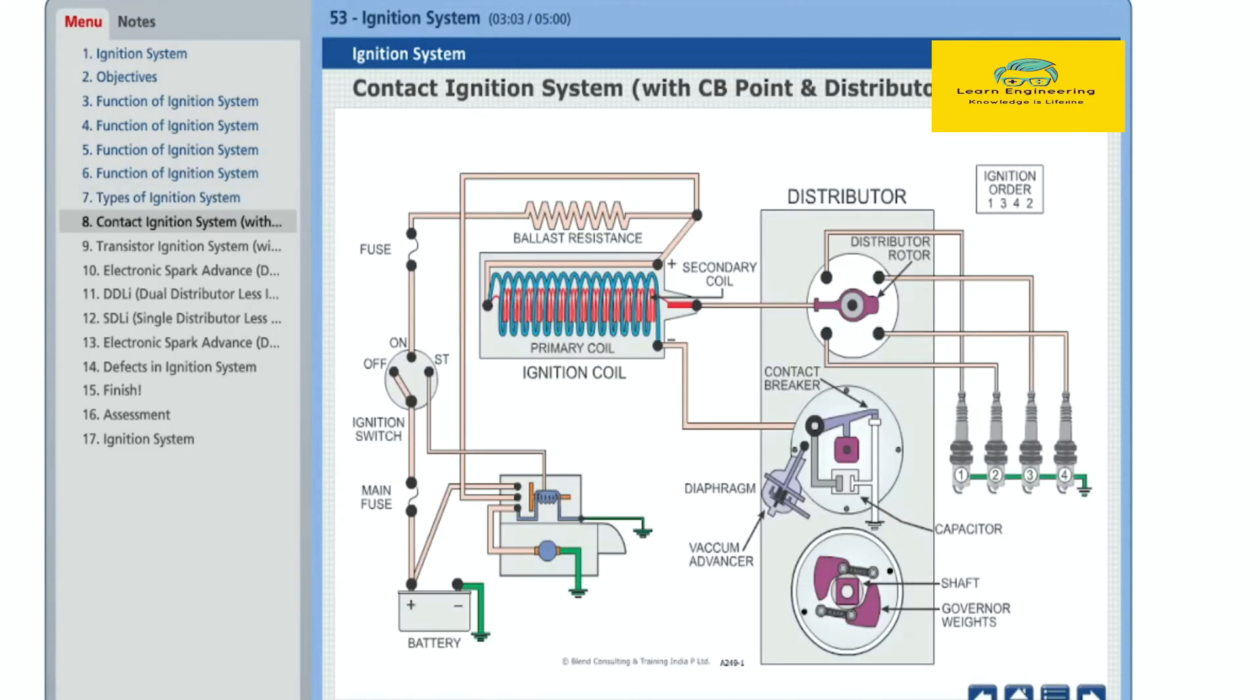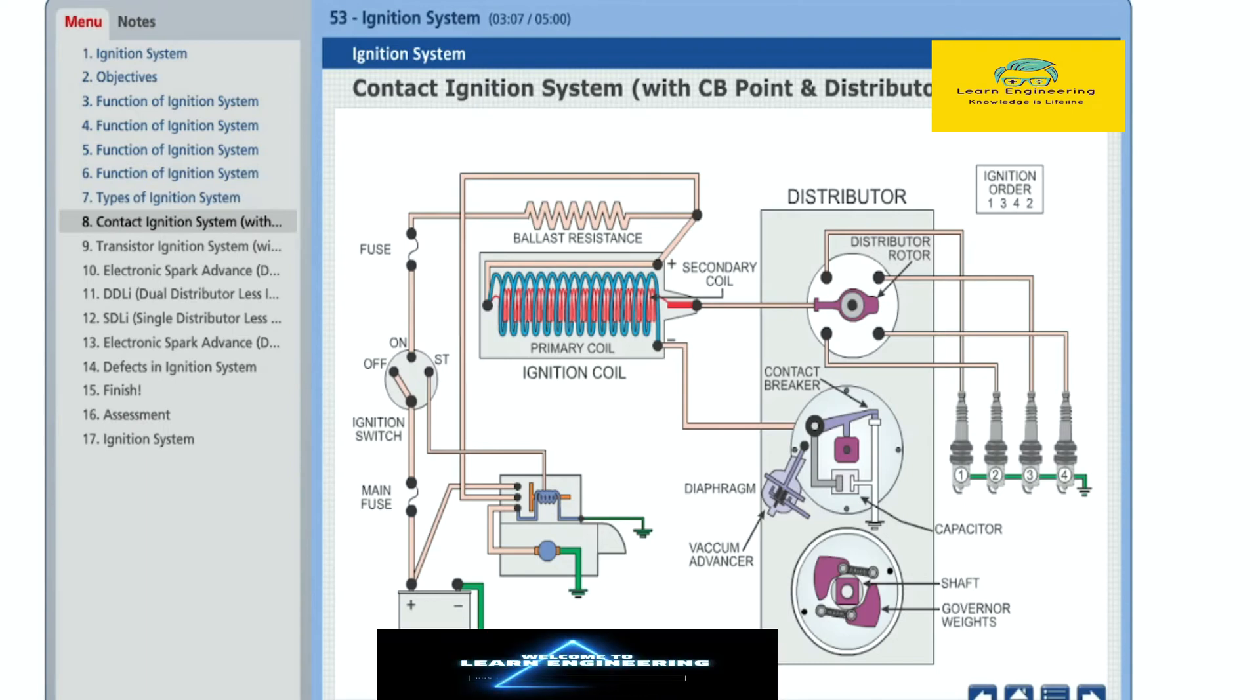Let us examine the function of contact ignition system. In this system, the current flowing from battery to the primary coil is cut off by a mechanical contact breaker point operated by a rotating cam located on the distributor shaft.